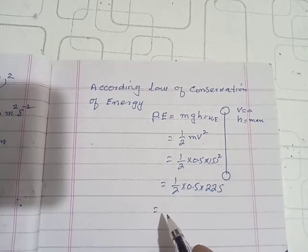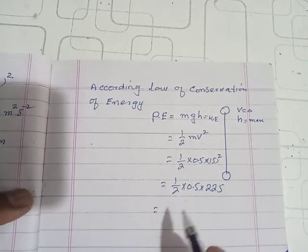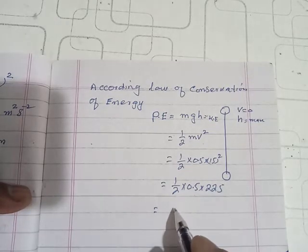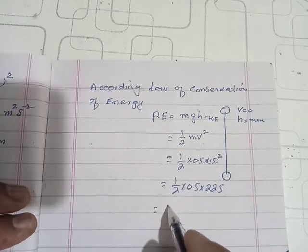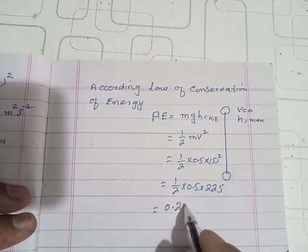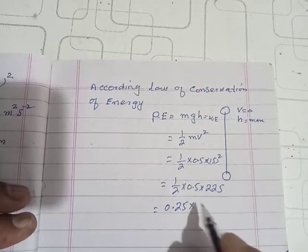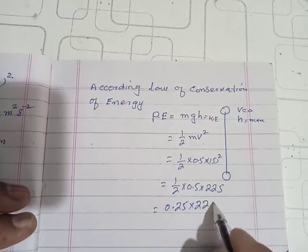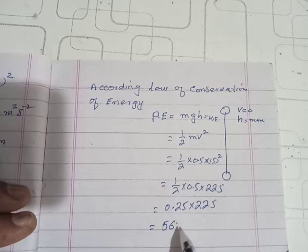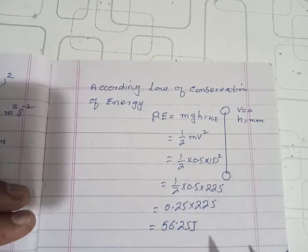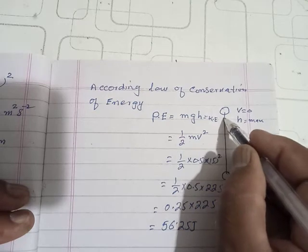When we solve this, dividing we get 0.25 × 225, which equals 56.25 joules. This is the potential energy when the stone reaches maximum height.